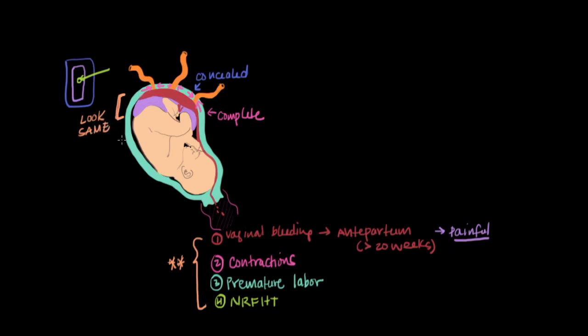In the case that you do make a diagnosis of abruption, deciding what the next step is can be pretty complicated. On one extreme end of the spectrum where mom and baby are both unstable, delivery is usually the answer. Delivery is also usually chosen if the baby is past 34-36 weeks and is healthy enough to survive outside the uterus.